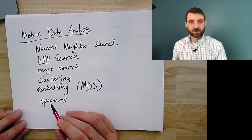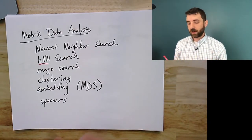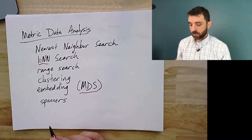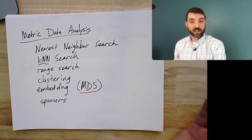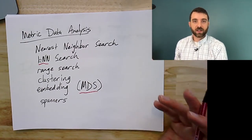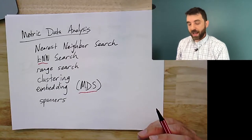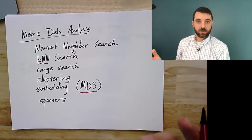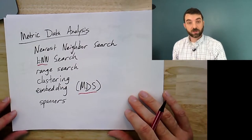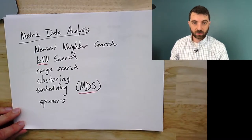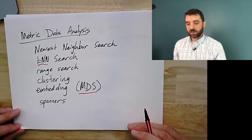Or maybe you want to do geometry: embed a collection of persistence diagrams into a geometric space using multi-dimensional scaling, or build spanners — sparse graphs that represent the metric well. With n diagrams you have n-choose-two pairwise relationships, but maybe a small number of pairs capture most of the metric, giving you a graph where shortest paths aren't much longer than actual distances. These are the most common types of metric data analysis questions.